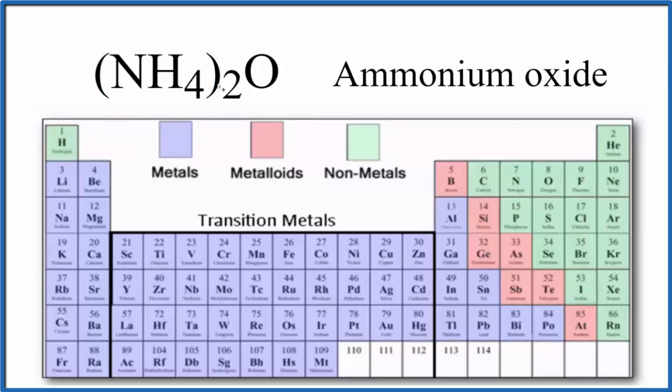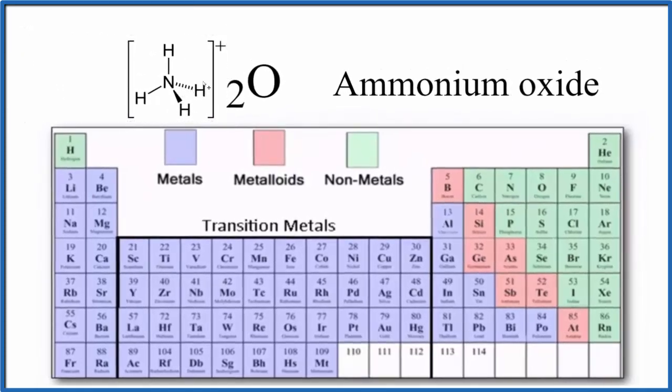That means it's a group of atoms that stay together and have an overall charge. So if we look at the NH4 ion, the polyatomic ion, we see we have our N with the four hydrogens around it, and the whole thing, the overall ion, has a 1 plus charge.